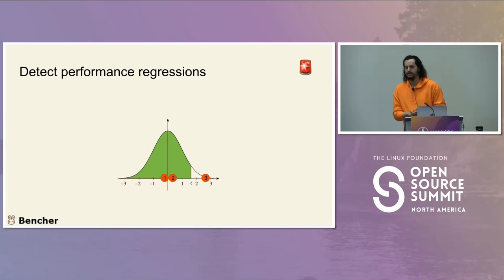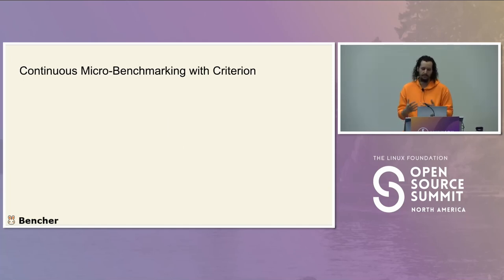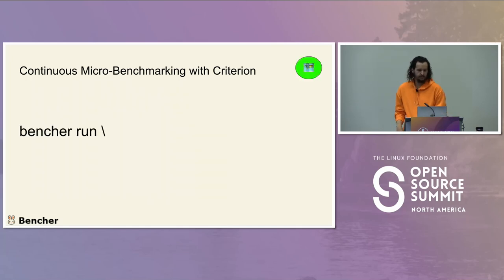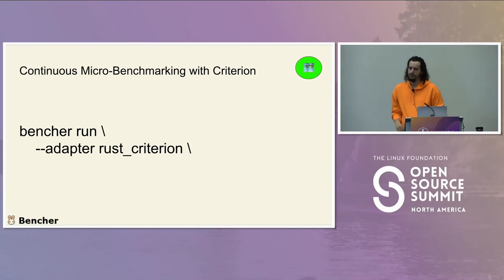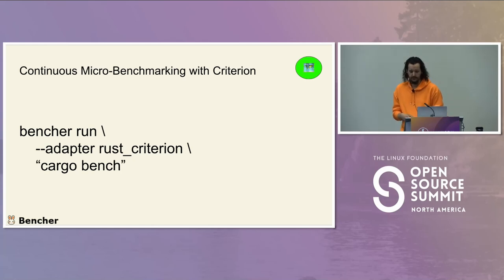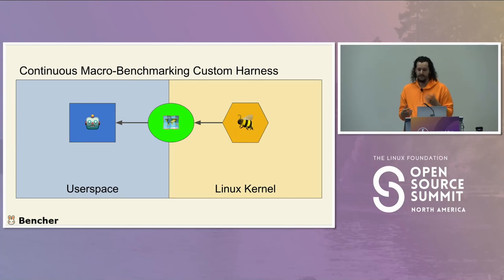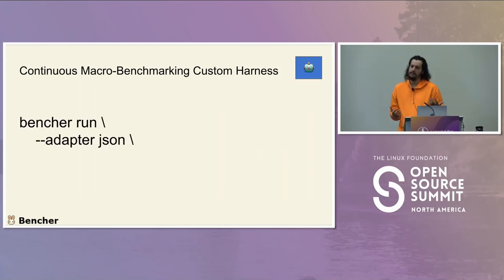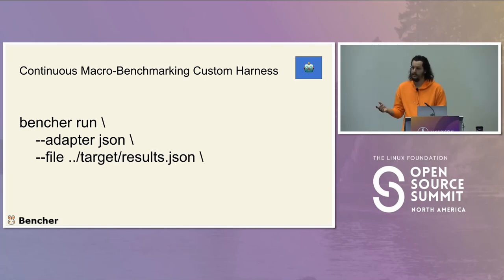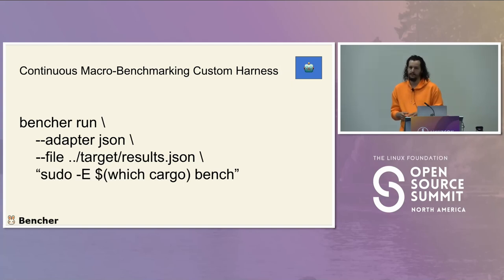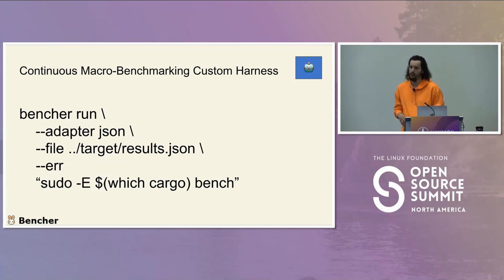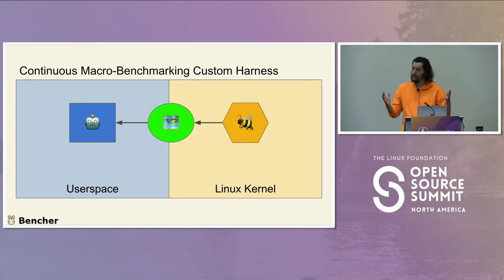Using statistical thresholds, you set the bounds of what's acceptable. The first and second results will be tightly clustered; the third will be way out — and that generates the alert. You can use both a z-score and a t-test, setting windows and sample sizes. For continuous micro-benchmarking with Criterion, you run bencher with the Rust Criterion adapter and your cargo bench command. In CI, add the --error flag to fail builds when an alert is generated. For macro benchmarking, use the JSON adapter and read from the saved results file.